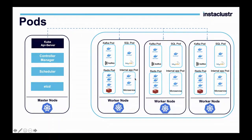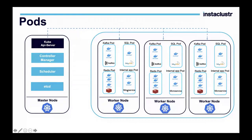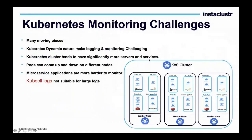A pod can have multiple containers to fulfill your application requirements. For example, a microservice might run a web server with a front-end container and a back-end container deployed in the same pod. Alternatively, you could deploy them as separate pods. The key point is that Kubernetes manages these pod deployments across the cluster automatically.